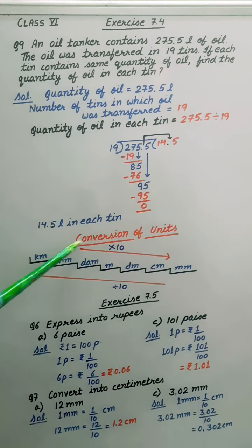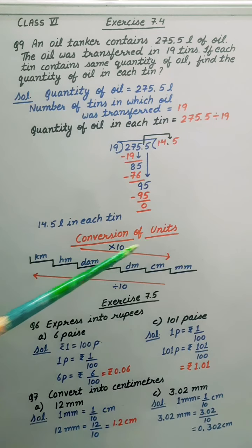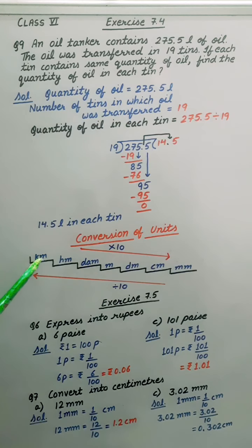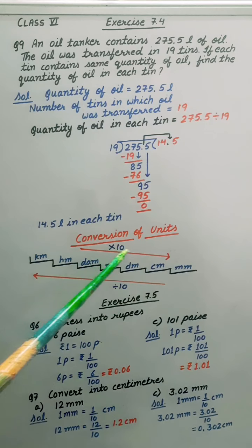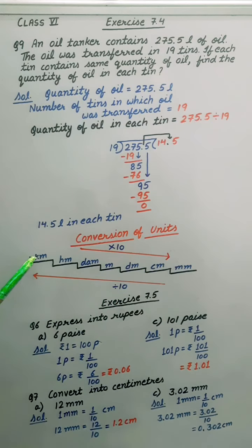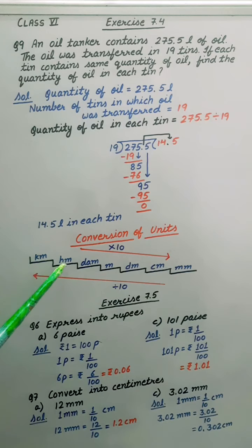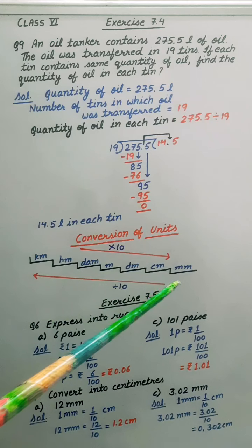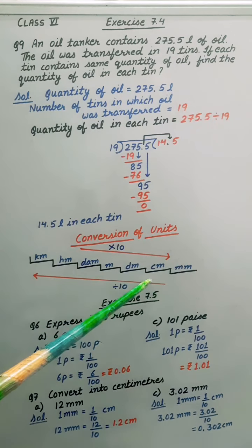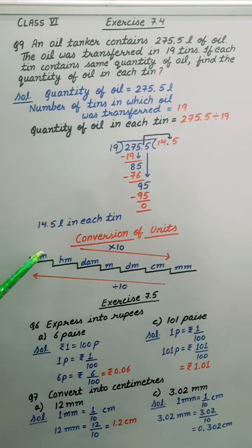Now let's begin conversion of units. This conversion we have already done, it is just a revision. Whenever we are converting a big unit into a small one, we multiply by 10 in each step. For kilometer to hectometer, we multiply by 10. And if we are converting small unit into big one, we divide by 10 in each step.